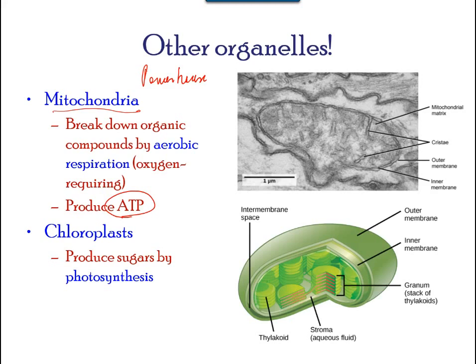Mitochondria are oval-shaped, double membrane organelles that have their own ribosomes and DNA. Each membrane is a phospholipid bilayer embedded with proteins. The inner membrane has folds called cristae, which increase the surface area. The area surrounded by the folds is called the mitochondrial matrix. Muscle cells have a very high concentration of mitochondria because they need a lot of energy to contract.